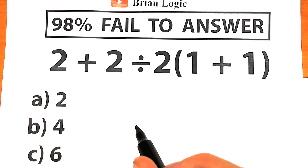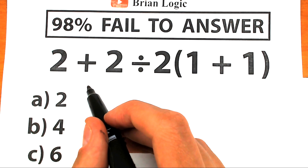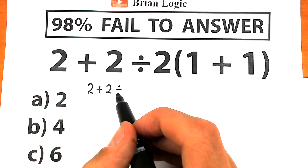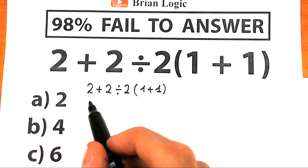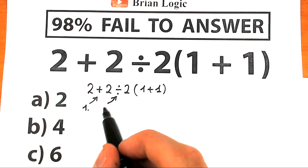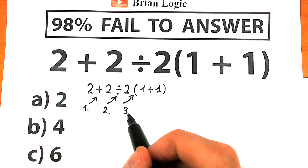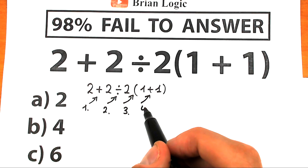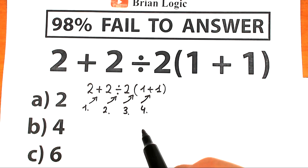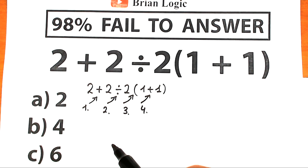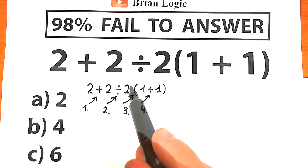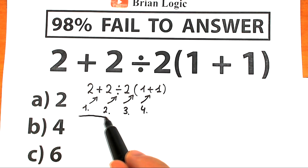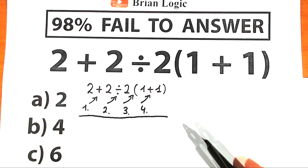Let me rewrite this challenge. We have 2, plus 2 divided by 2, and in parentheses we have 1 plus 1. We have four math operations here: addition, division, multiplication, and a small addition inside the parentheses. In math, we should know the correct order to do this problem — we can't solve these challenges randomly. Doing operations in whatever order we want is a really bad thing in math.